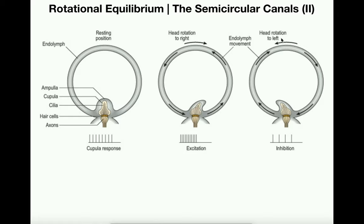Notice what happens when we have head rotation to the left — the opposite direction. The endolymph also moves in the opposite direction and it moves the cupula in the opposite direction. So depending on which direction the cupula moves, you either have excitation — a faster firing rate — or inhibition, a slower firing rate of those axons.